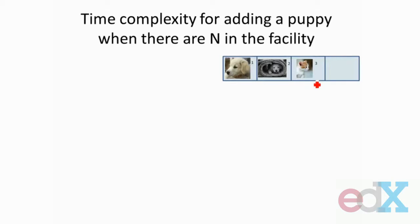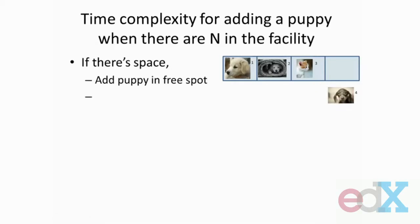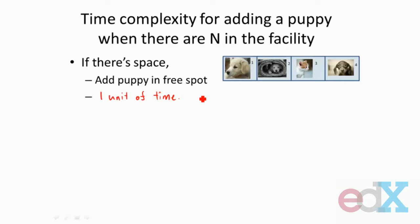As computer scientists, let's think about how to analyze how long it takes to add a puppy into Tim's puppy storage facility. There seem to be two situations. In one case, say there are three puppies and he has space to store four. When he has a new puppy and there's space for it, he can just add the puppy into the new spot — that's just going to take one unit of time. Notice that it didn't depend on n, n being the number of puppies in the facility. So that's constant time — it takes big O of one time, or constant time.